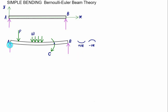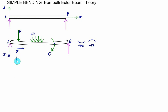Since our axis system is set at A, we have X equal to zero at A. The bending moment at any distance X is given as a moment which is a function of X, and we assume it is expressed in the form of X and is a positive value.